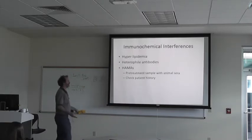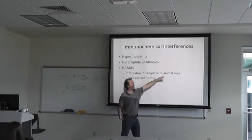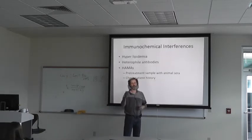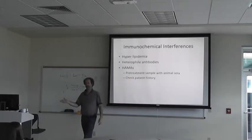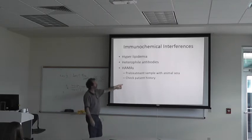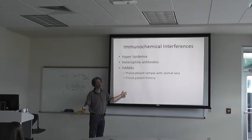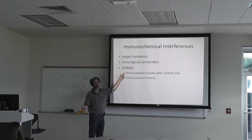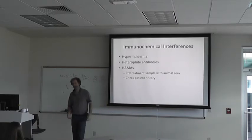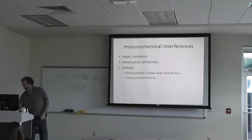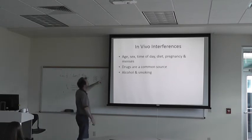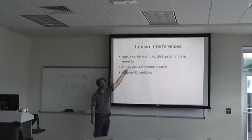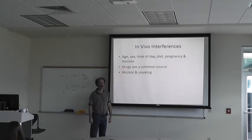If you pre-treat the sample with mouse serum, hopefully you'll tie up all the anti-mouse antibodies with that serum and saturate them. You also want to check the patient history to see if they've been treated with mouse antibodies or other types of antibodies that might interfere. And then there are in vivo interferences such as age, sex, time of day, diet, pregnancy, and menses — we already talked about that in chapter 18.